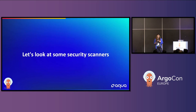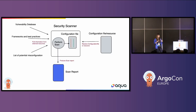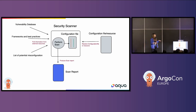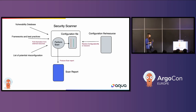Now let's look more at security scanners. What are they and how do they work? Ultimately, security scanners take different information from, for example, vulnerability databases on the different vulnerabilities found in different libraries. They also take information from frameworks and best practices — thinking here, for example, about NSA benchmarks or CIS compliance scans. These benchmarks and compliance scans tell you, based on best practices, how your application should be running and how it should be configured to be optimized in a security-focused mindset.